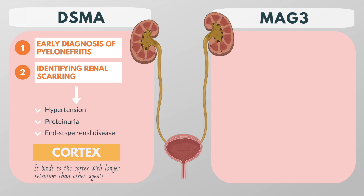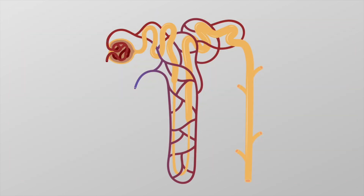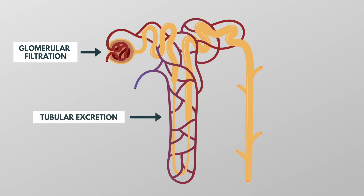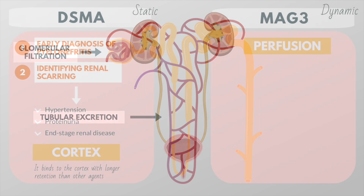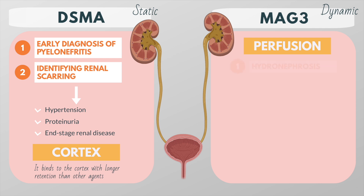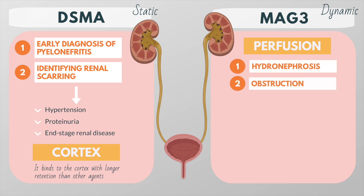In contrast to the DMSA scan, which gives a static image of the cortex uptake only, the MAG-3 renogram is a dynamic study in which the perfusion into the kidneys and the drainage out of the kidneys can be followed. The tracer is excreted via both glomerular filtration and tubular excretion. This test is mainly used to detect hydronephrosis or renal tract obstruction. Sometimes Lasix is given in order to maximize urine production, which helps to demonstrate obstruction.